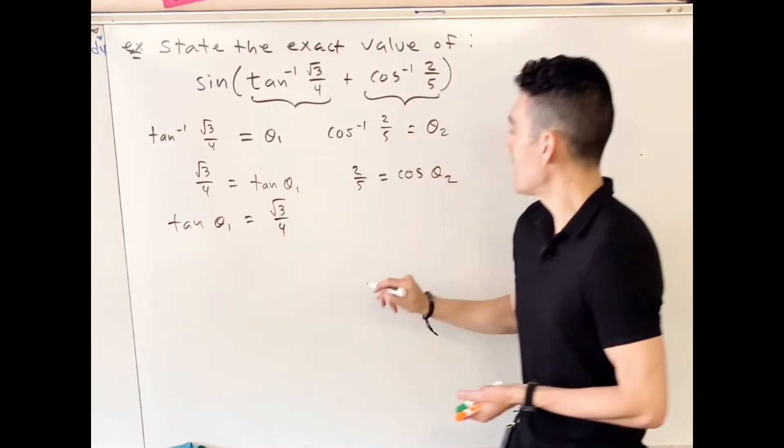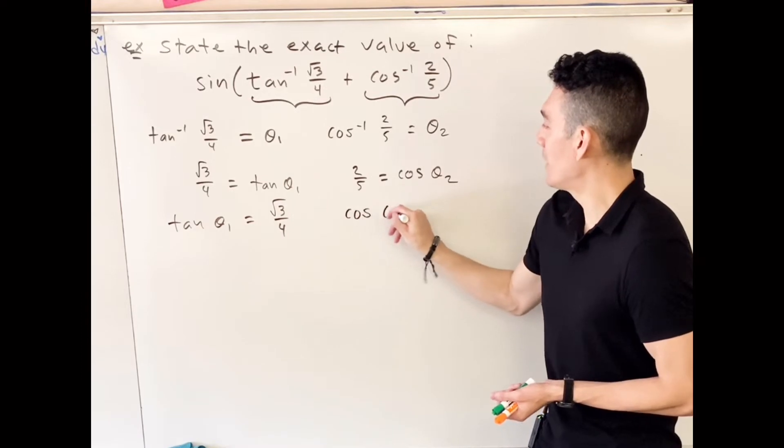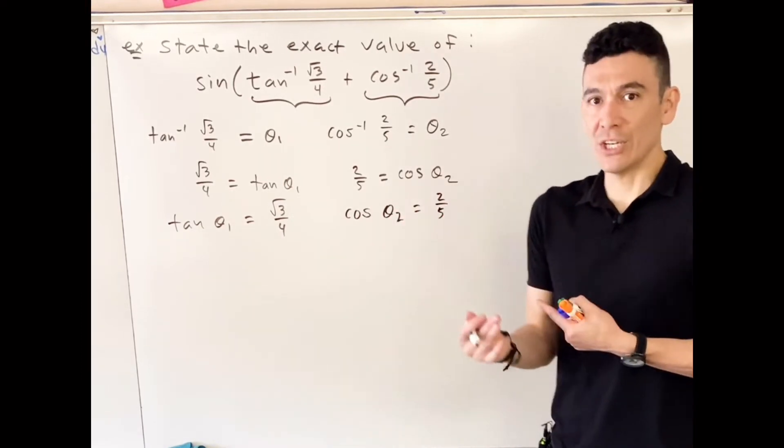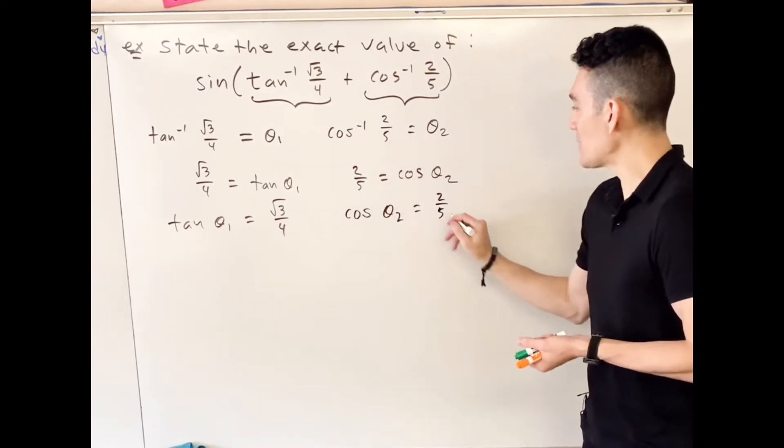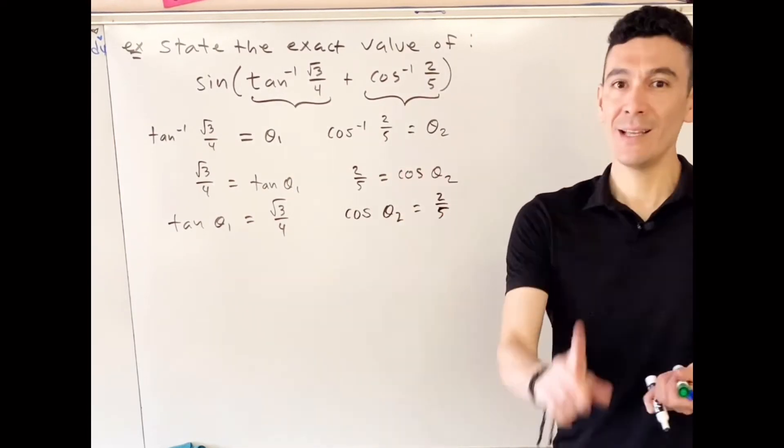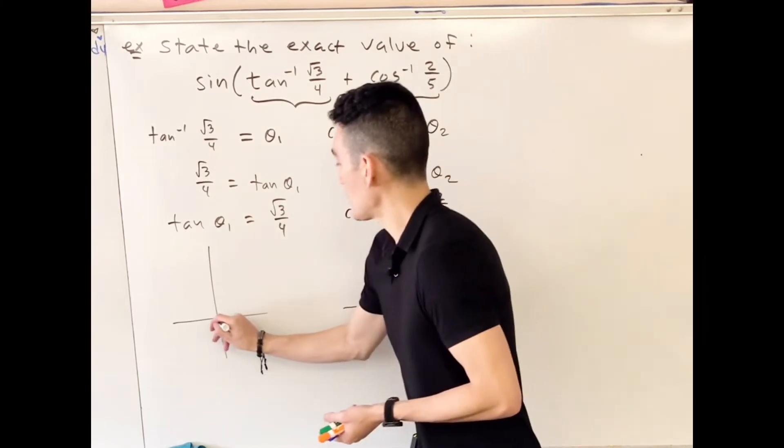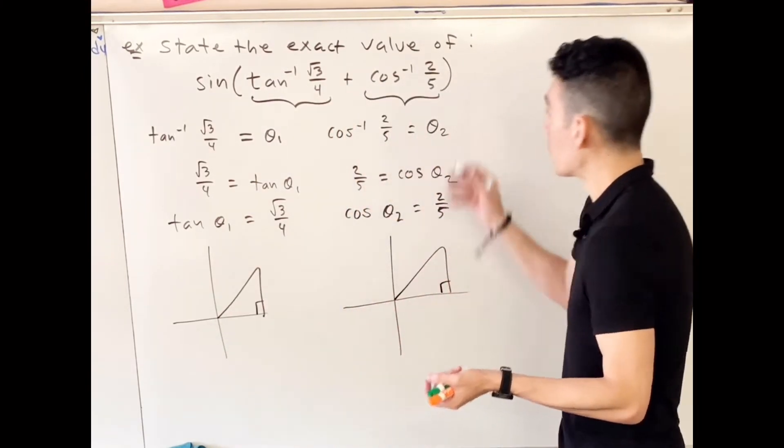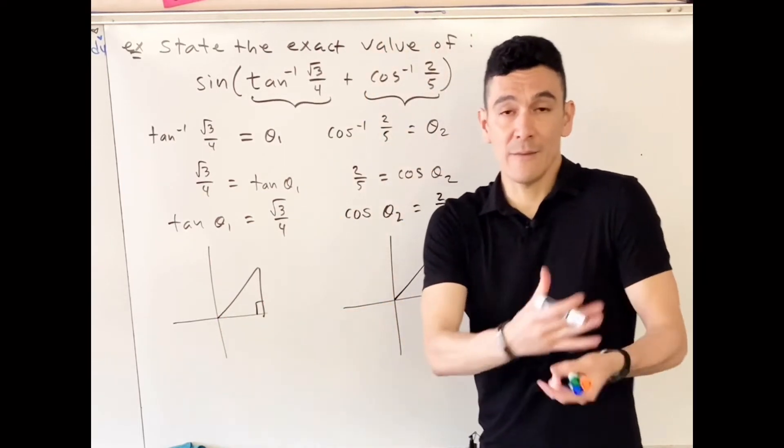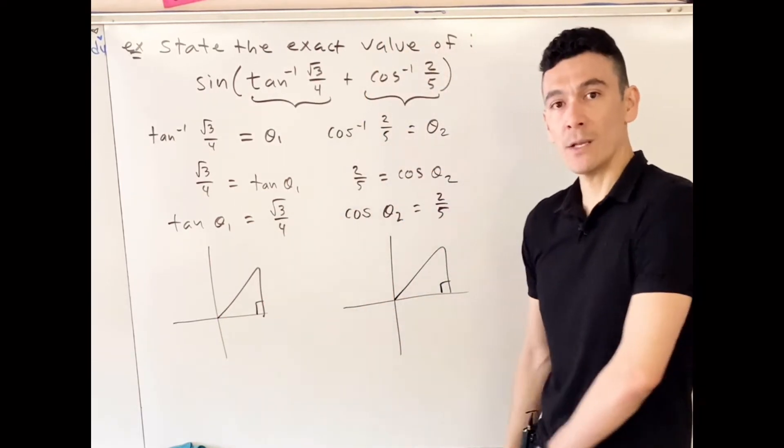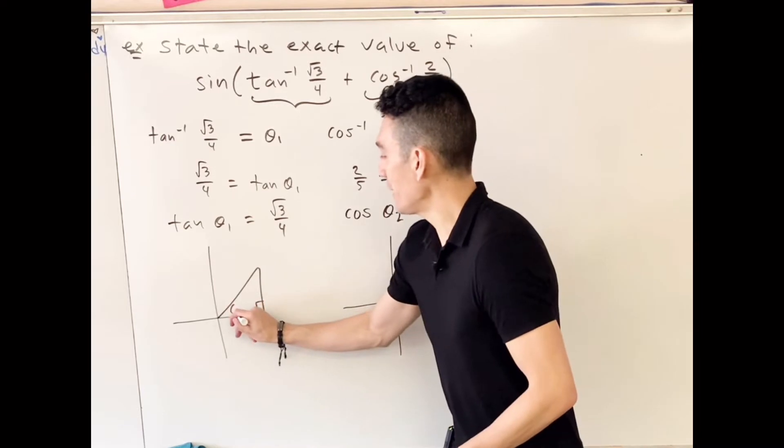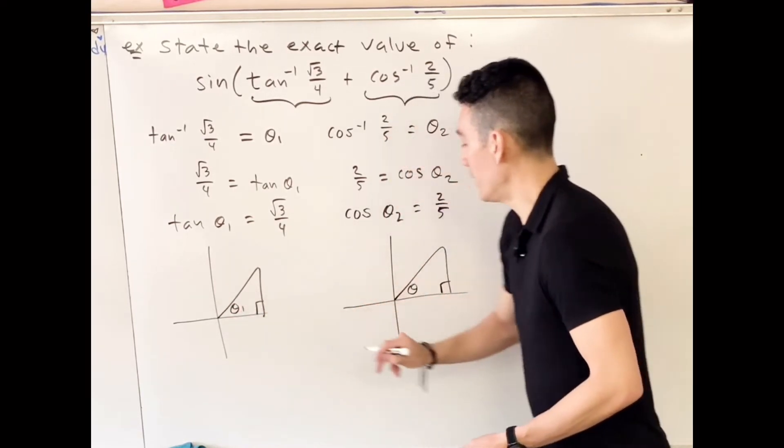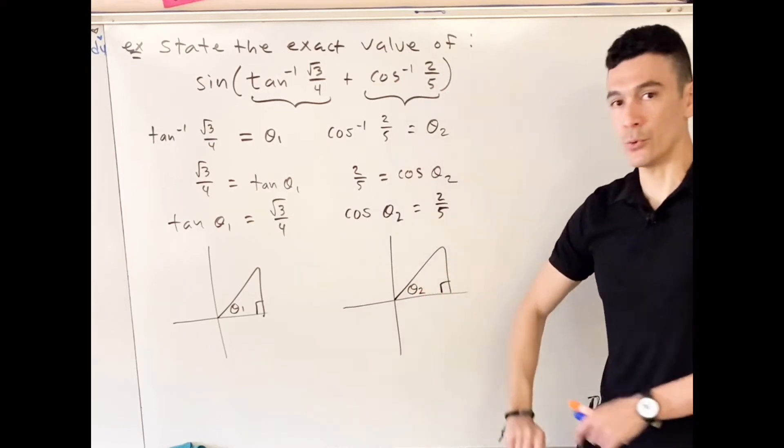What good do these equations do for us? They give us the opportunity to make pictures and make some right triangles. How come quadrant one? Well because they didn't tell you which quadrant to go to, and if they don't, go to quadrant one always. So we have theta here and we have theta, but of course this is theta one and theta two.